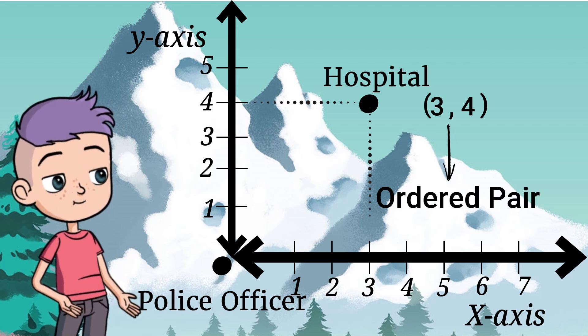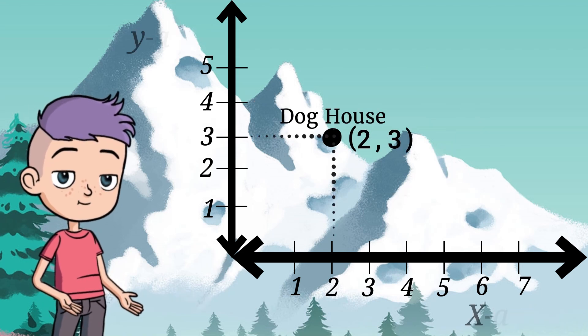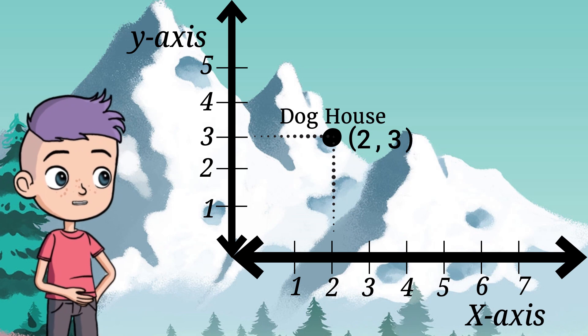Let's write your ordered pair for the doghouse. The doghouse is located at 2, 3.